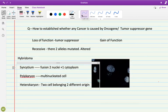Bismillahirrahmanirrahim. So today we are going to discuss a very important question: how can anyone establish whether cancer is being caused by an oncogene or a tumor suppressor gene?